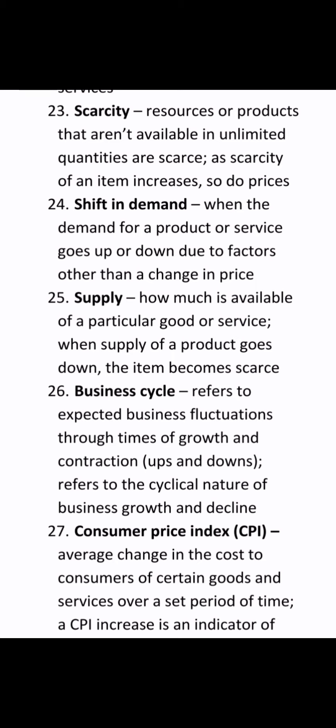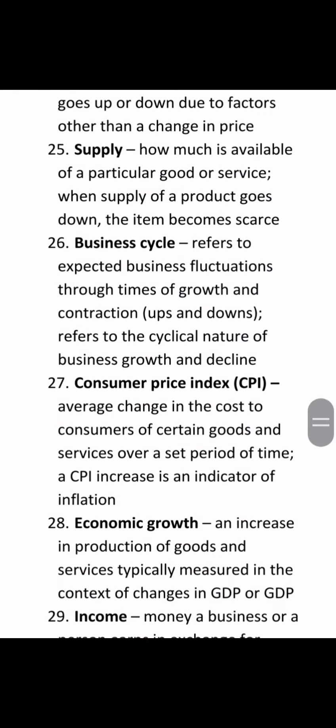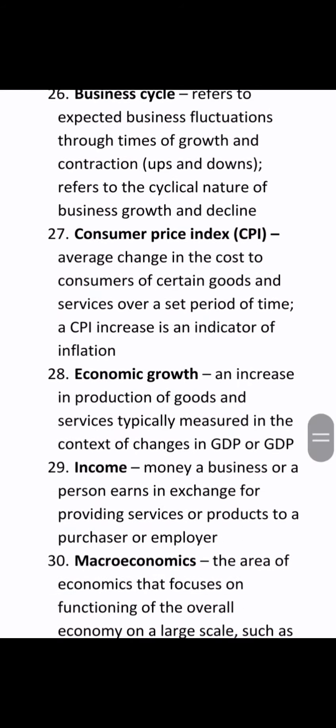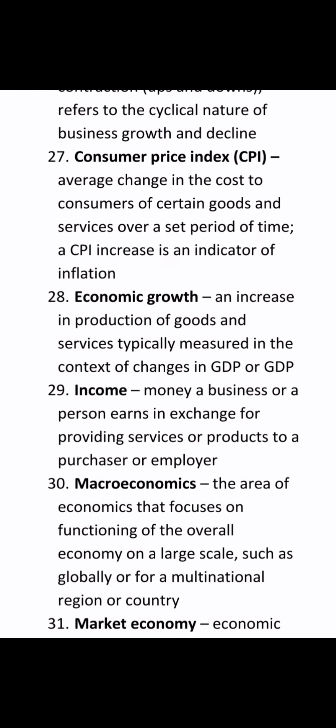Business cycle refers to expected business fluctuations through times of growth and contractions. CPI refers to the average change in the cost to consumers of certain goods and services over a set period of time. Economic growth is an increase in production of goods and services, typically measured in the context of changes in GDP.